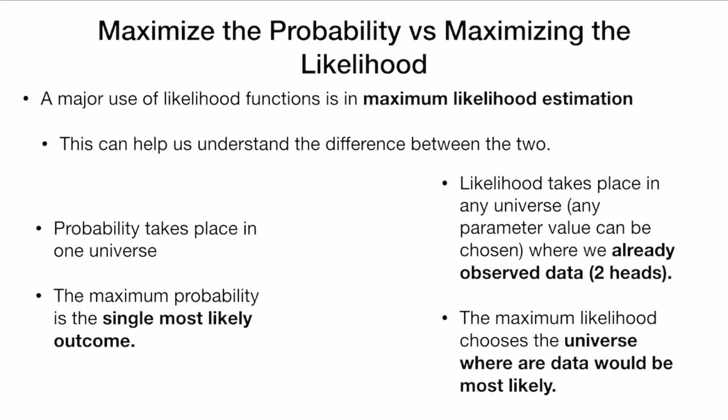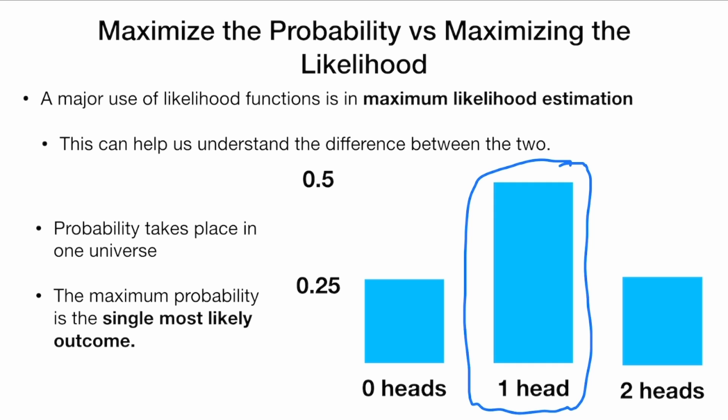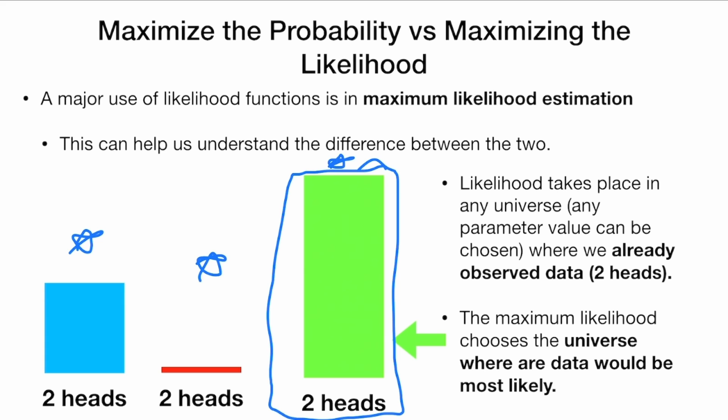We can see this illustrated by talking about the idea of maximizing the probability versus maximizing the likelihood. A major use of likelihood functions is maximum likelihood estimation, and this can help us understand the difference between the two. Here is an illustration of probability — what is the maximum probability? The most likely outcome with a fair coin is one head. However, likelihood takes place in any universe. So if we observe our data — we observe two heads — we have different likelihoods depending on which universe we chose. So we're going to choose the universe in which our data was most likely, where the probability of heads was very high.